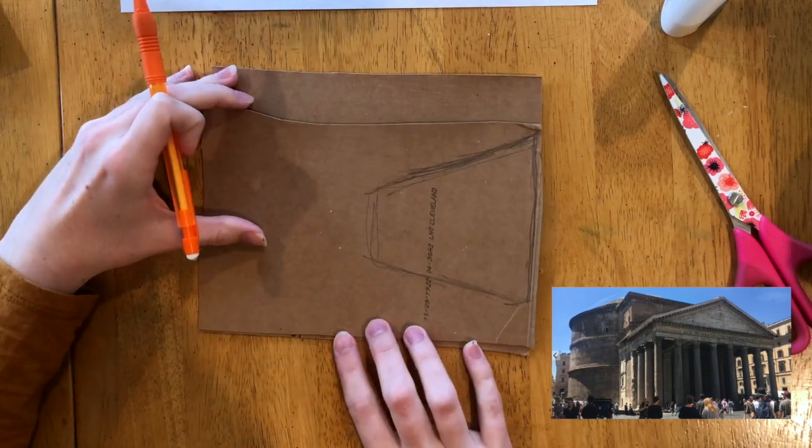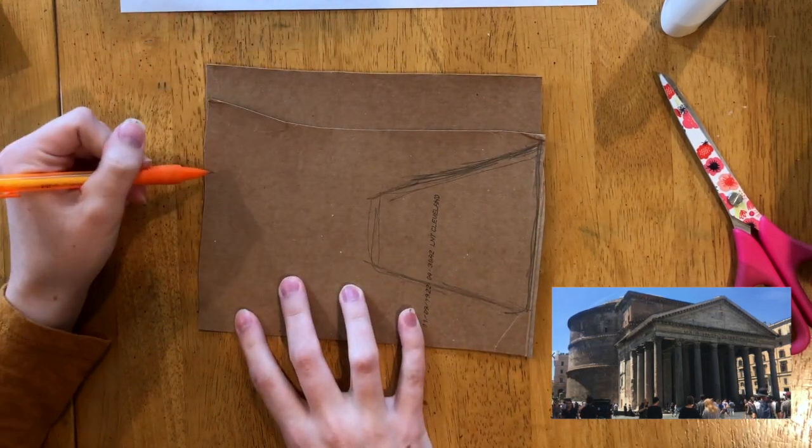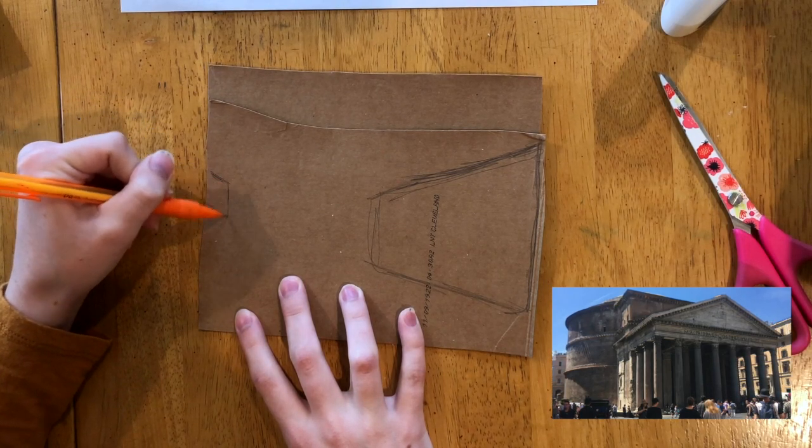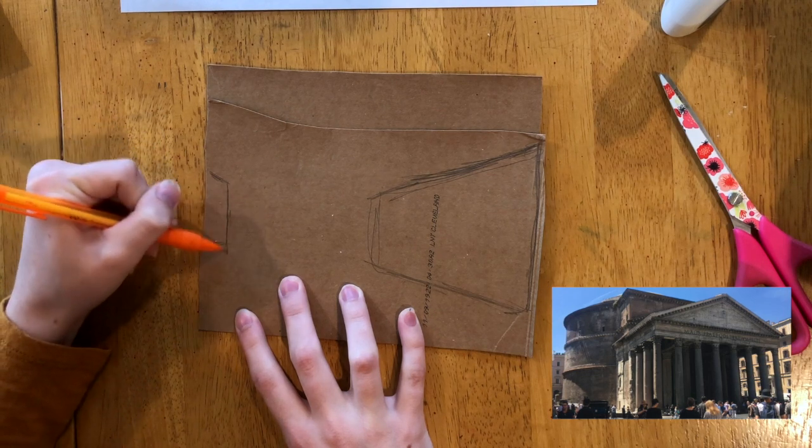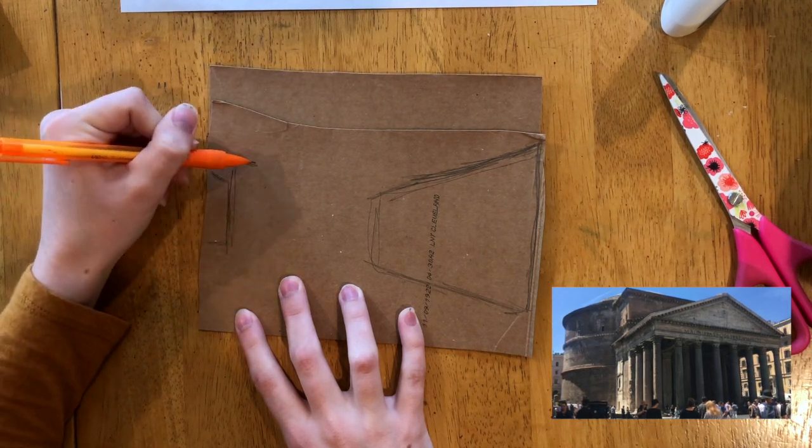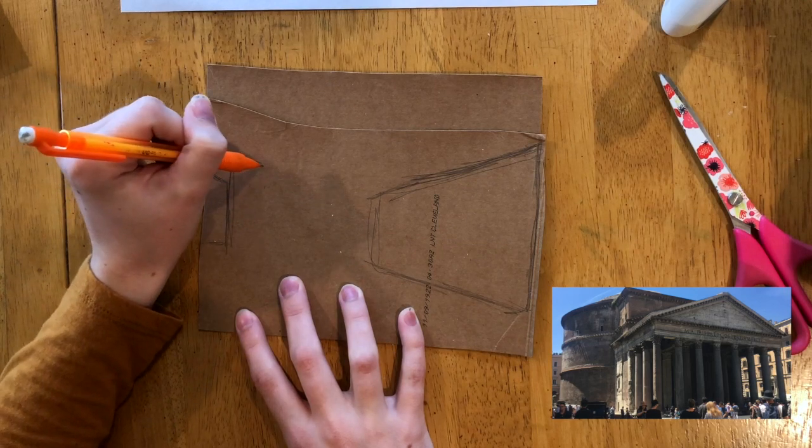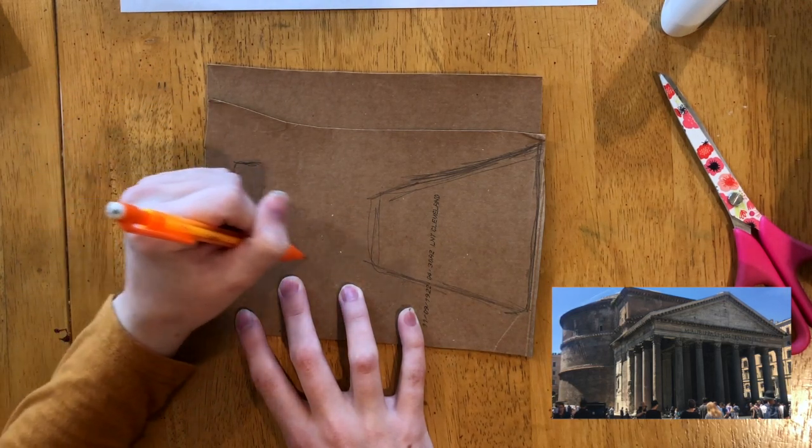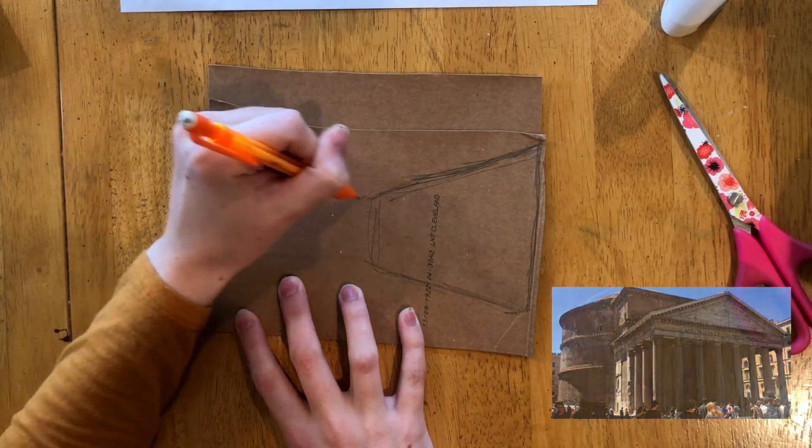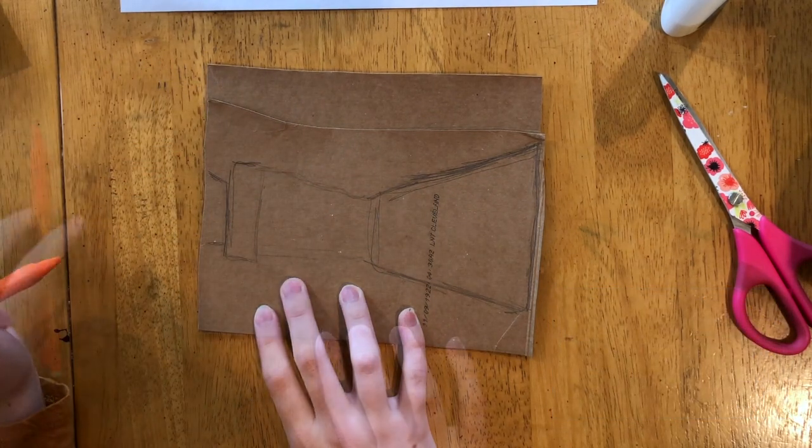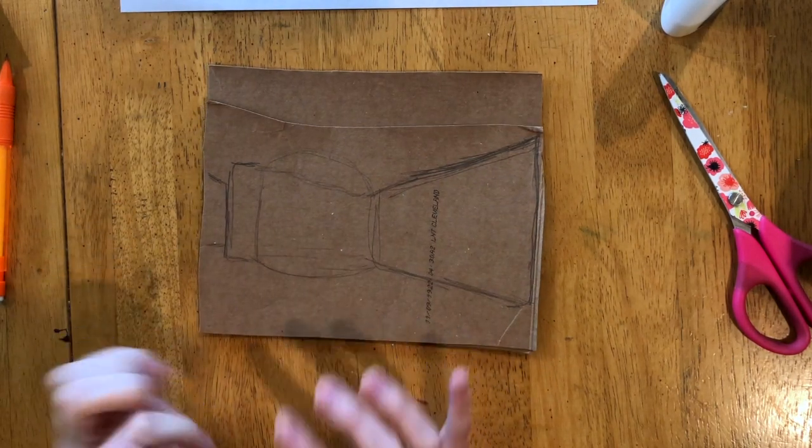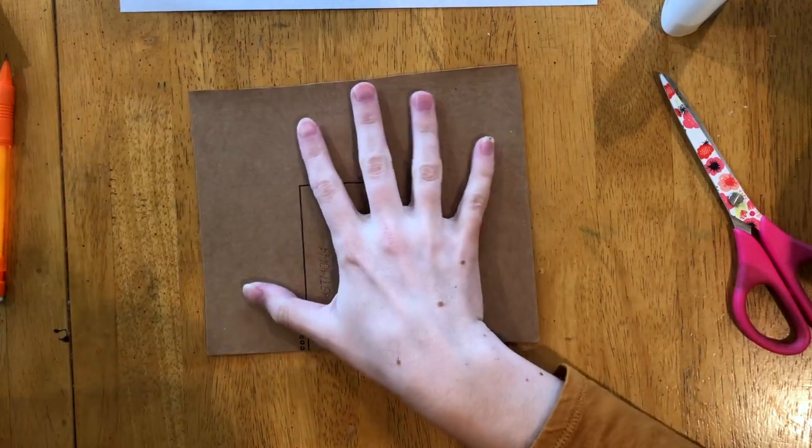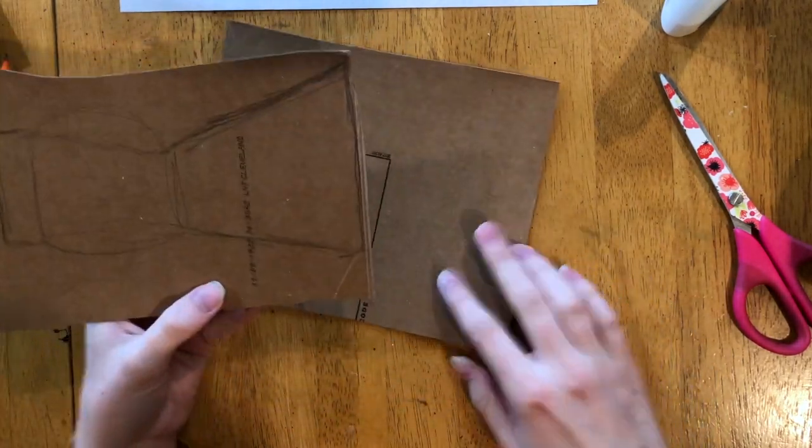Cut that off there. And then over on the other side, we've got some other little buildings that come down and back. Okay, so these are our background shapes. I'm going to go ahead and cut them out and then align them with my working surface and glue down my background. Here we go.